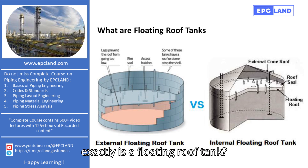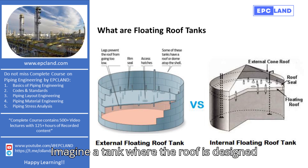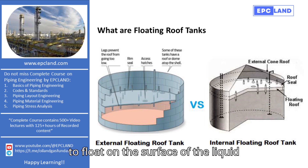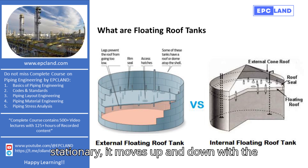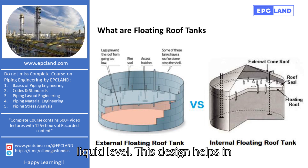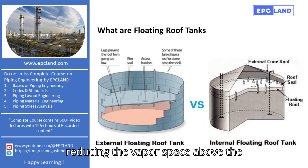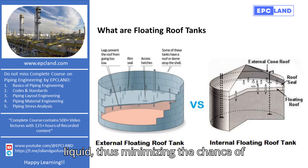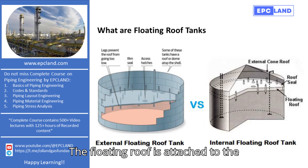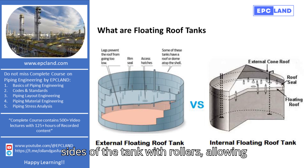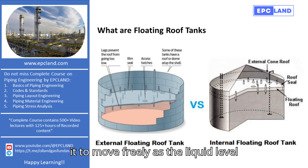What exactly is a floating roof tank? Imagine a tank where the roof is designed to float on the surface of the liquid inside. This roof is not stationary — it moves up and down with the liquid level. This design helps in reducing the vapor space above the liquid, thus minimizing the chance of vapor escaping into the atmosphere. The floating roof is attached to the sides of the tank with rollers, allowing it to move freely as the liquid level changes.